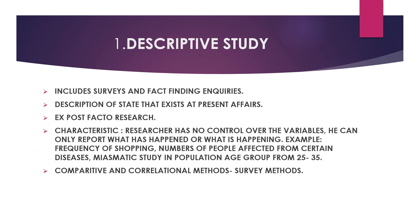First of all, descriptive study or descriptive research: in this type of research, it includes surveys and fact-finding inquiries. We will go for a survey and fact-finding inquiries — we will take up the facts and surveys. Descriptive research describes the state that exists at present. For example, taking the present scenario of COVID vaccinations.